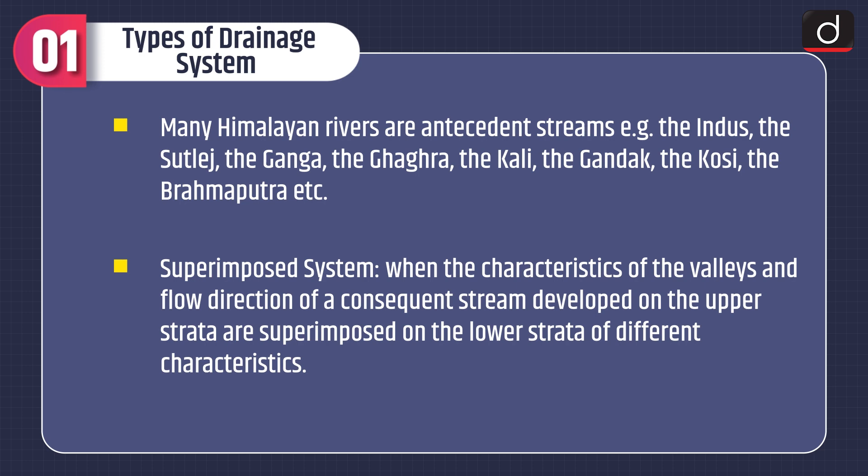The superimposed drainage system is when the characteristics of the valleys and flow direction of a consequent stream developed on the upper strata are superimposed on the lower strata of different characteristics.